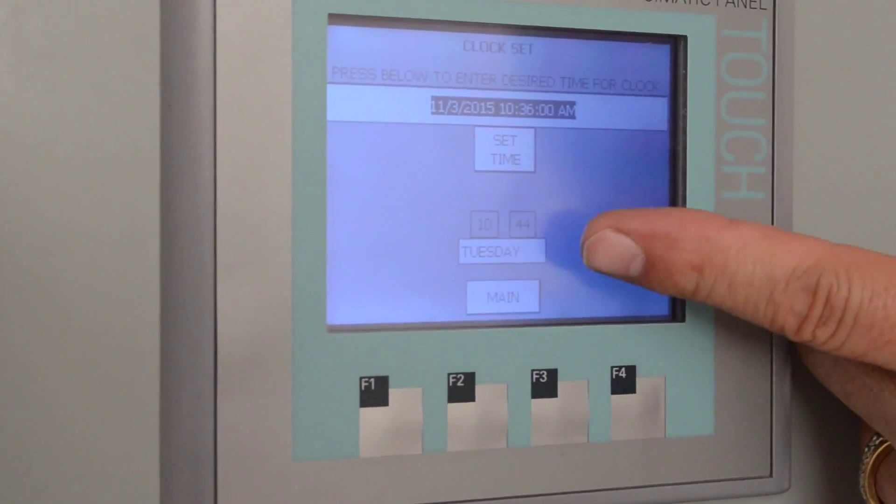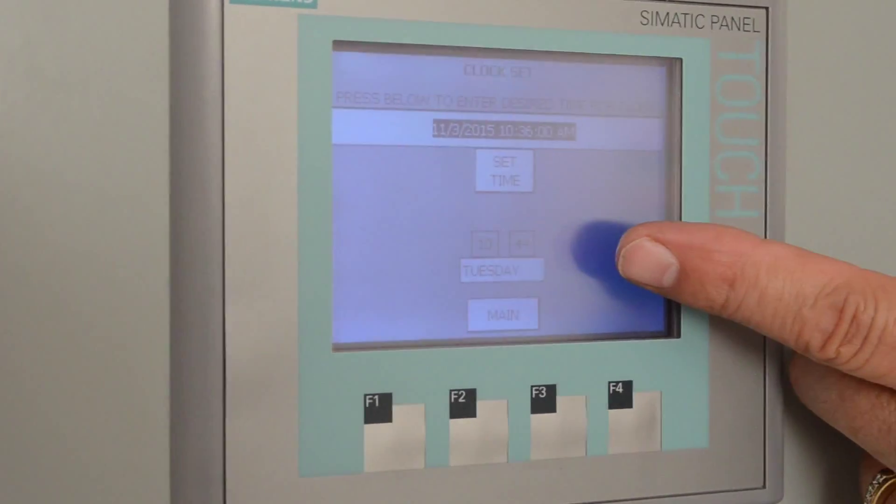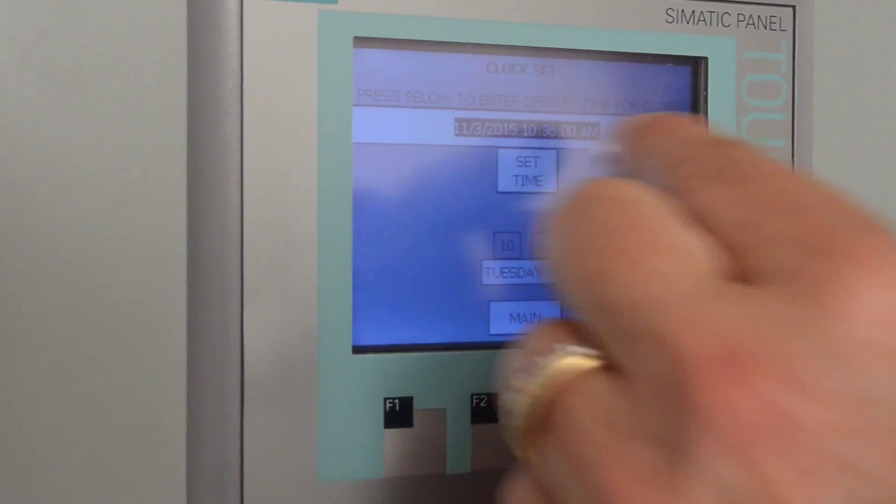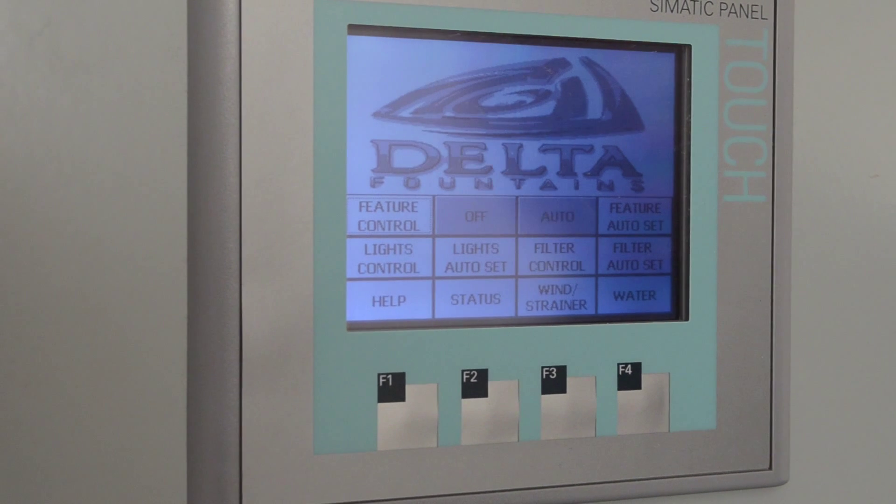Then when it does that, the time of day will change and the day of the week will change. I'm not going to do that right now because I'm not going to change the time of day, but that's the last thing you do. Once you get it in the right format, then you press set time and it sucks it into the CPU, and now it'll show on your status screen what the proper time is.